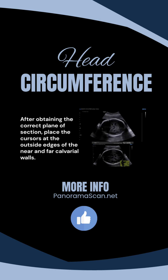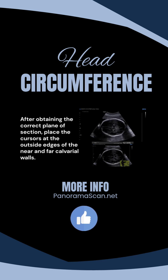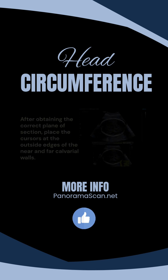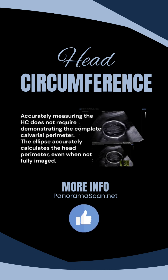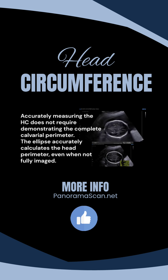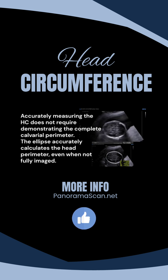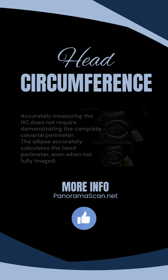After obtaining the correct plane of section, place the cursors at the outside edges of the near and far calvarial walls. Accurately measuring the HC does not require demonstrating the complete calvarial perimeter. The ellipse accurately calculates the head perimeter, even when not fully imaged.